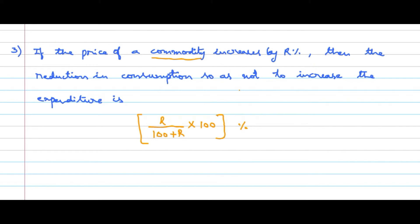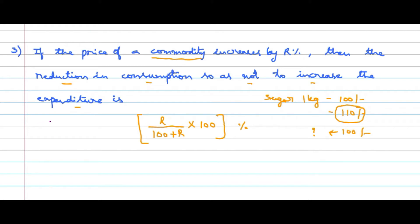For example, if the price of a commodity increases by 10 percent — say I have sugar whose value is 100 rupees for 1 kg — its value has been increased to 110 rupees now for 1 kg. But I am ready to reduce my consumption so as not to increase the expenditure; I want to put only 100 rupees. So using the formula, R = 10, it is 10 divided by 110 into 100 percent, which gives 100 by 11 percent. So this much I need to reduce my consumption.